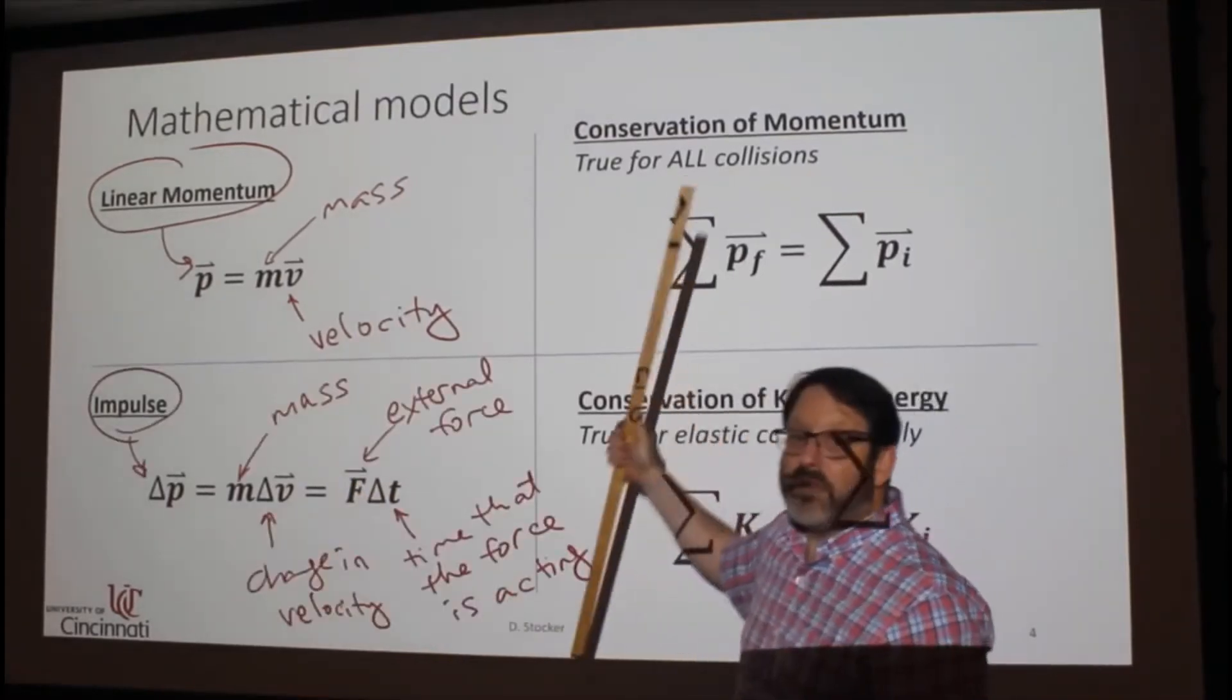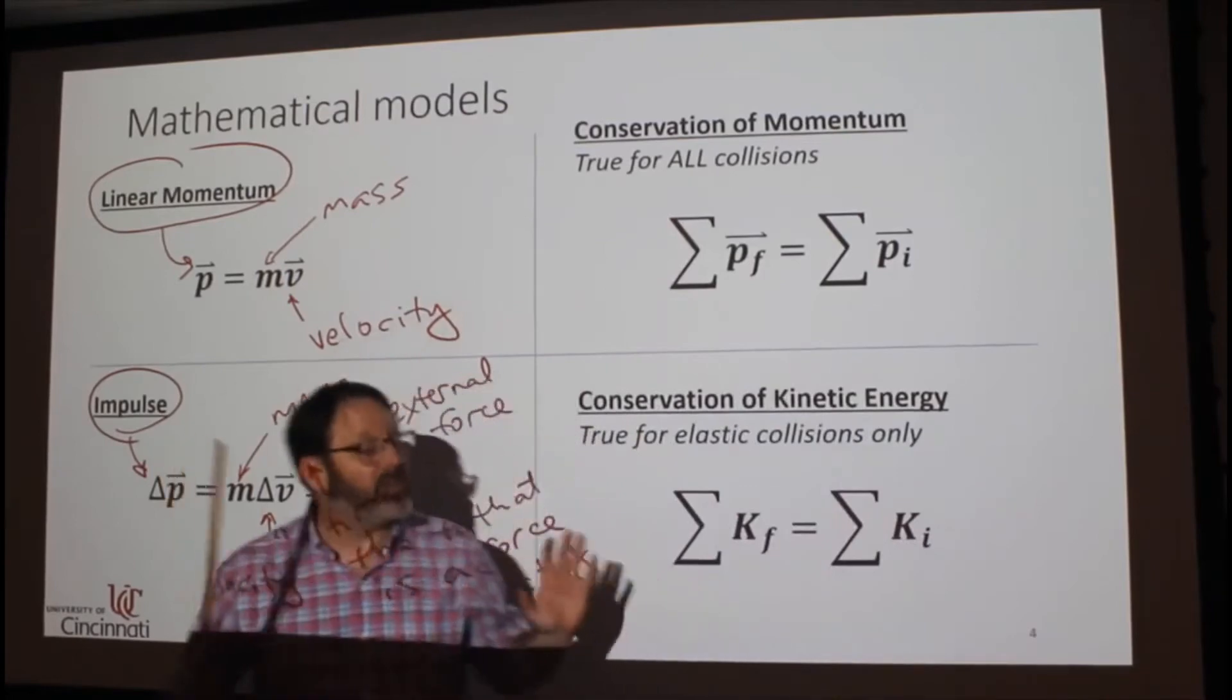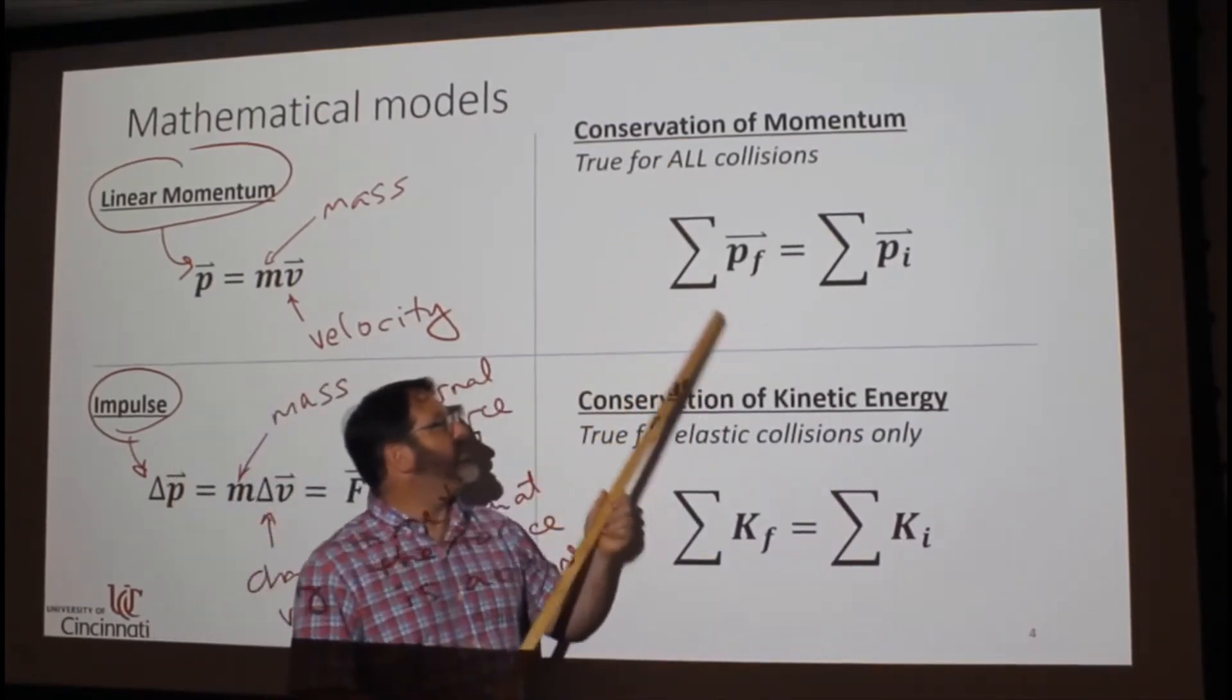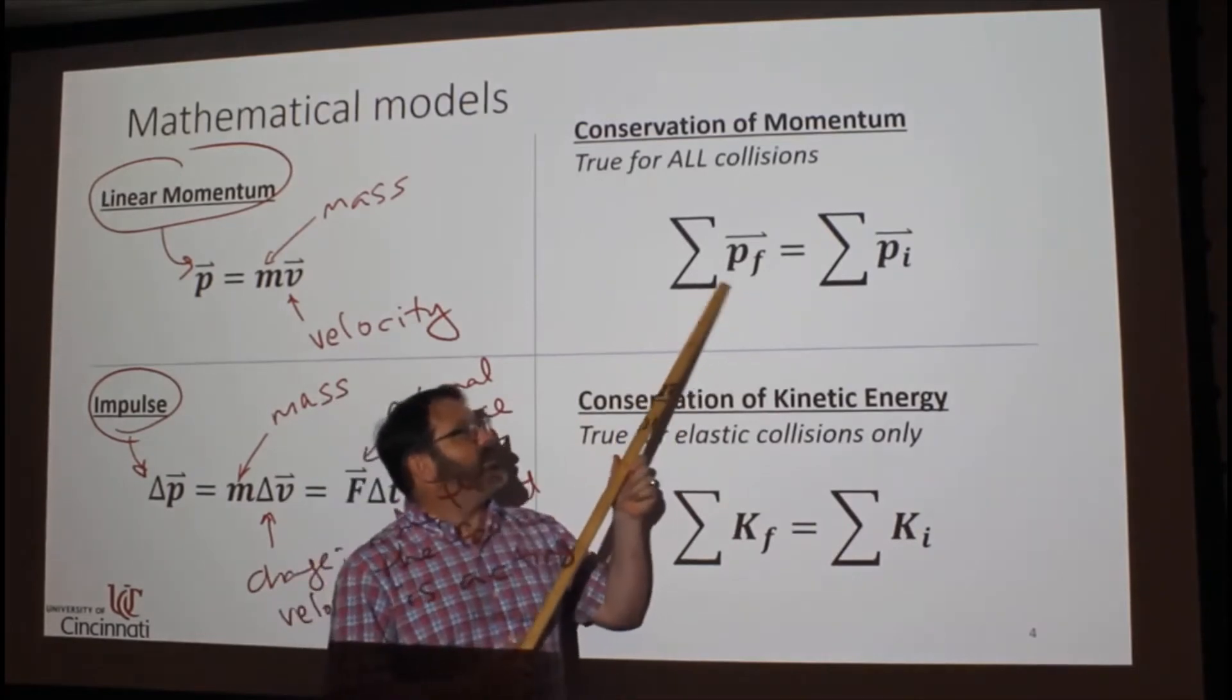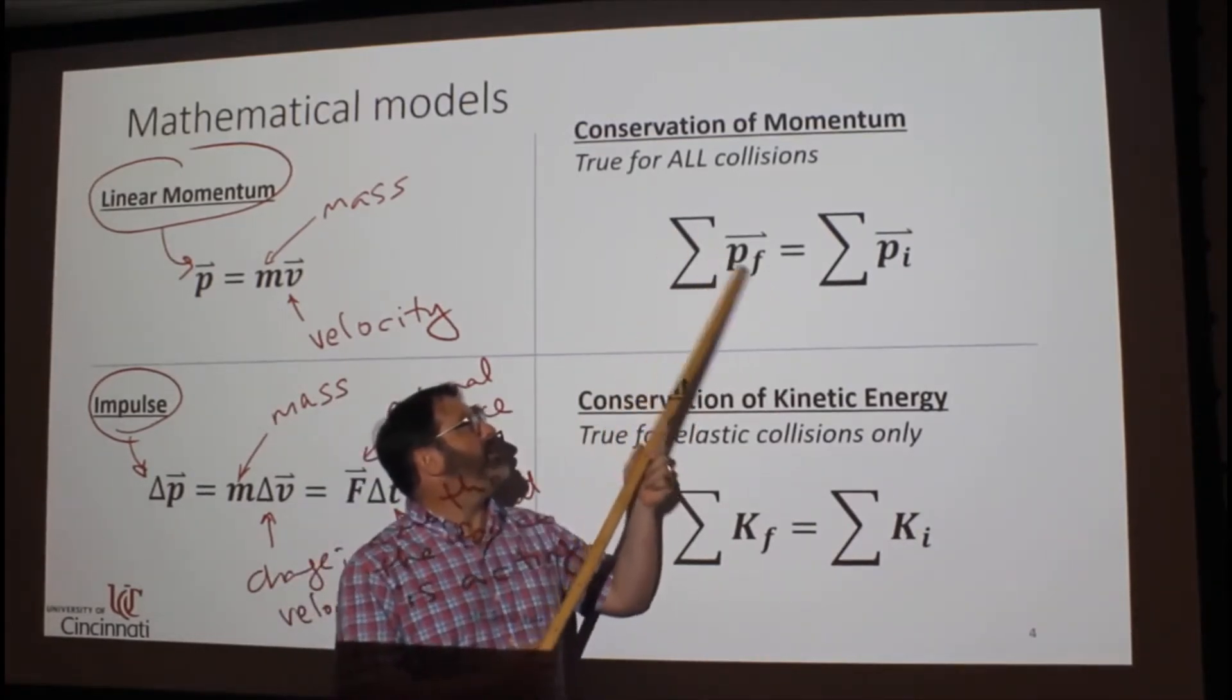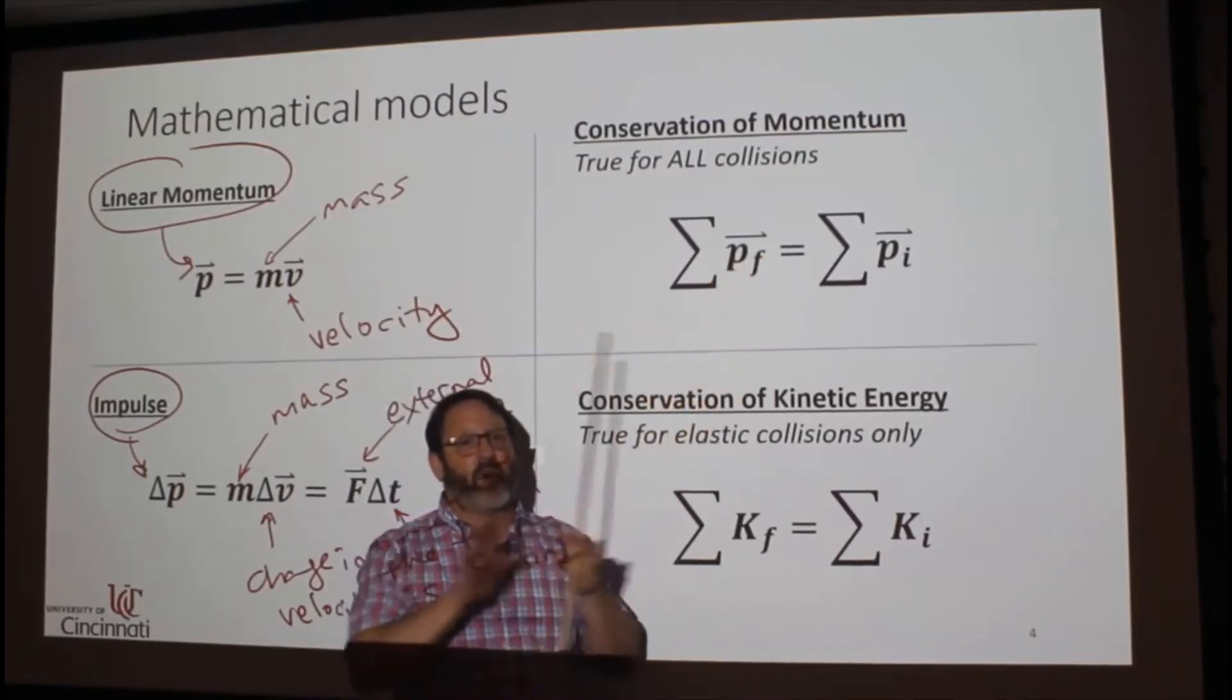Now, conservation of momentum. This is true for all collisions. For any collision, momentum is conserved. So this is the final momentum. This means the sum of all the final momentum of all the pieces.